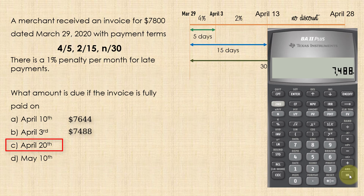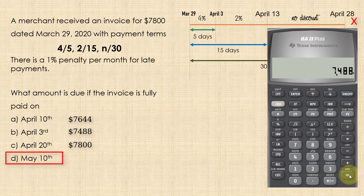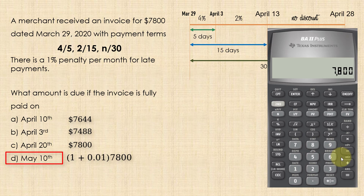For April 20th, which falls between the 13th and 28th, no discount applies. So the net invoice amount of $7,800 is due. Lastly, since May 10th is beyond the credit period of April 28th, the 1% penalty will apply, and the amount due will be $7,800 plus 1%, which gives $7,878.